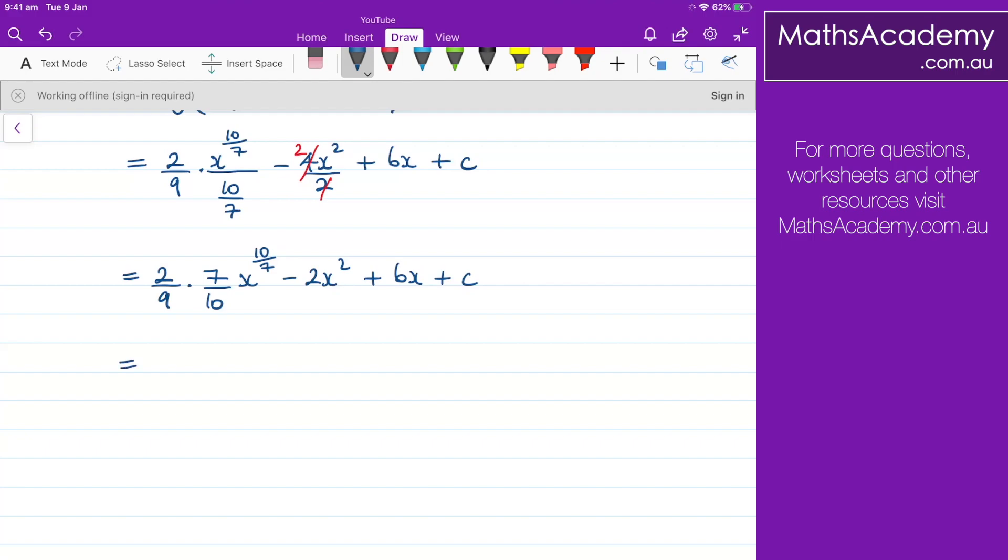Now looking at these first two fractions here, I can spot we've got a common factor of 2. So 2 goes into 2 once and goes into 10 five times, and now we can multiply across to give 7 over 45 x to the power of 10 over 7, minus the 2x squared plus the 6x plus that constant of integration.